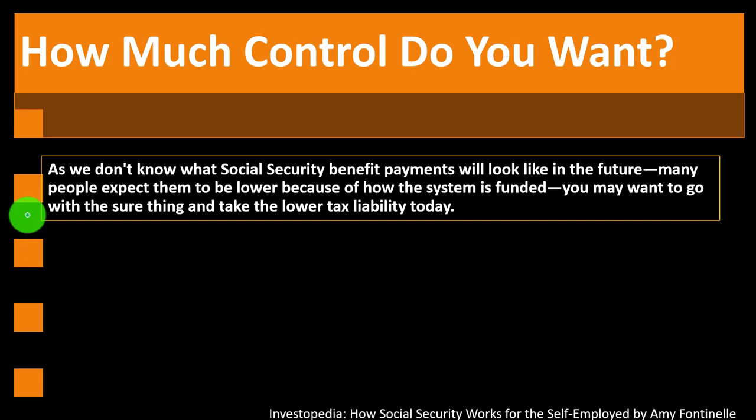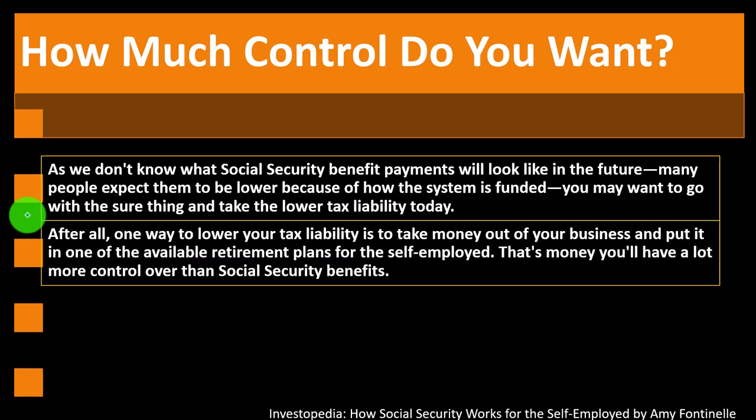How much control do you want? We don't know what Social Security benefit payments will look like in the future — many people expect them to be lower because of how the system is funded. If you're further away from receiving Social Security, the law could totally change: the retirement age could increase and benefits could be lowered given that Social Security is essentially underfunded at this point. So you may want to go with the sure thing and take the lower tax liability today. One way to do that is to take money out of your business and put it into one of the available retirement plans for the self-employed — an IRA or a SEP or SIMPLE — money you'll have a lot more control over than Social Security benefits.